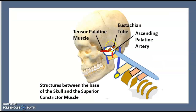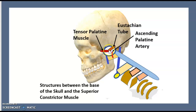The structure between the base of the skull and the superior constrictor muscle contains three elements: the first is the Eustachian tube, the second is the tensor palatine muscle, and the third is the ascending palatine artery.